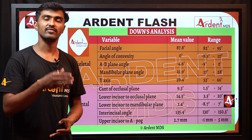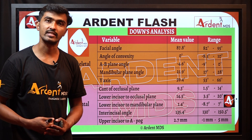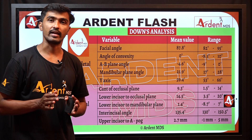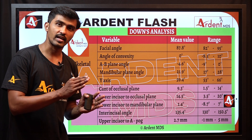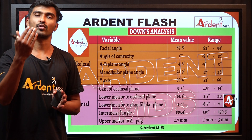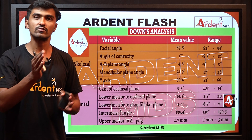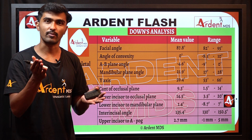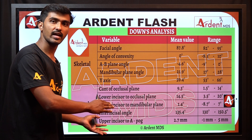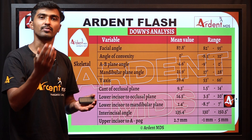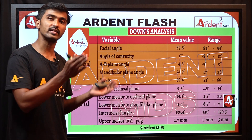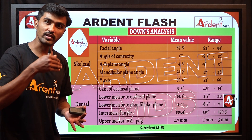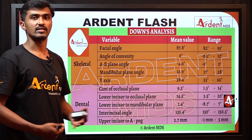The lesser the inter-incisal angle, the more proclined the teeth. So the angle and inclination are totally inversely proportional. Lesser the inter-incisal angle, more the proclination; more the inter-incisal angle, less the proclination of the incisors. This is the importance of the inter-incisal angle.